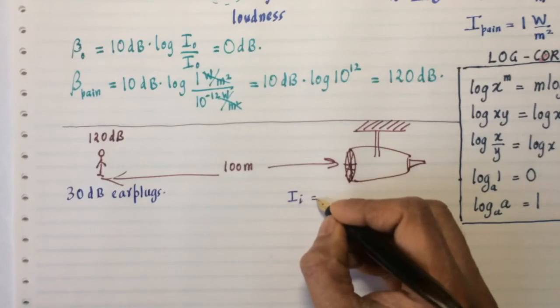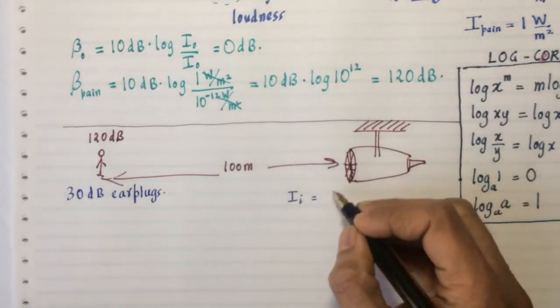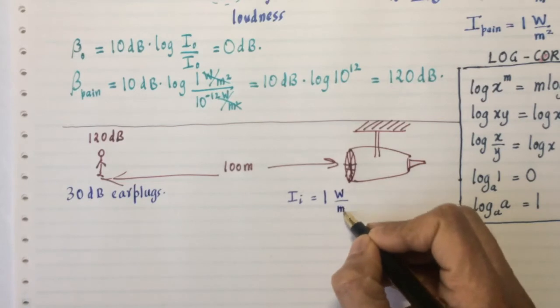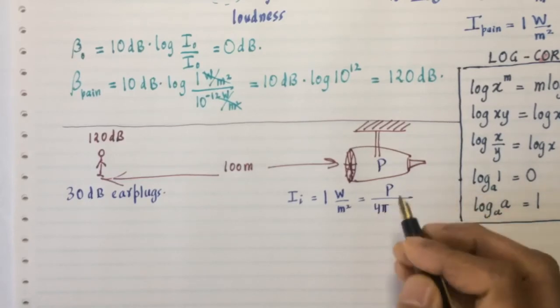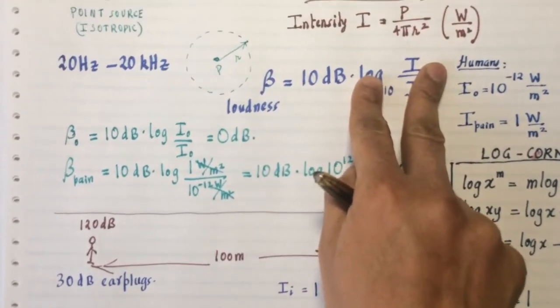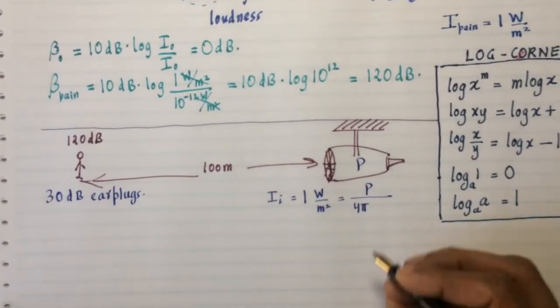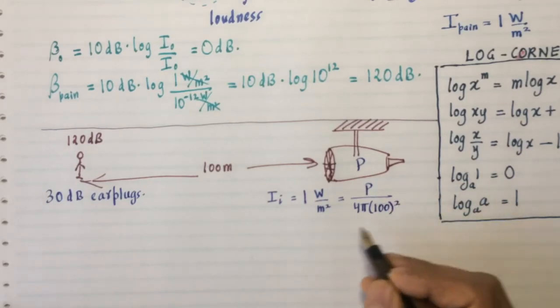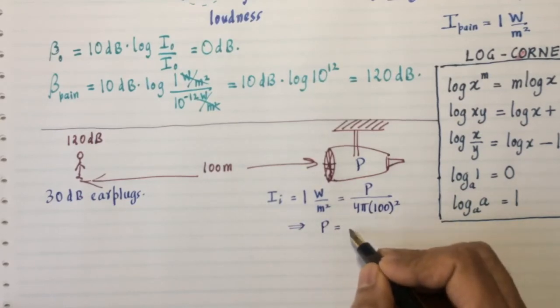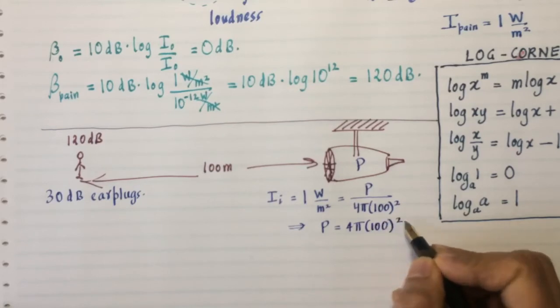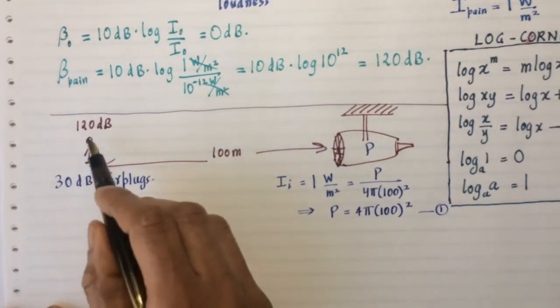So this problem is very simply solved like this. The original intensity I_i that you experience at this location should be the threshold of pain, which is one watt per square meter. So that's going to be one W per m². And that's also equal to the power of the jet engine, which I'll call simply P, divided by 4π times the distance squared. I'm using here the isotropic point source formula. Imagine this jet engine is a point. It really is not, but that's the assumption I'm making. Times 100 squared. I'm going to just use SI units. So P is going to be 4π times 100². Let's save that equation because we'll need it soon.